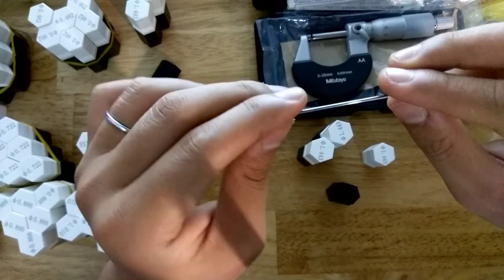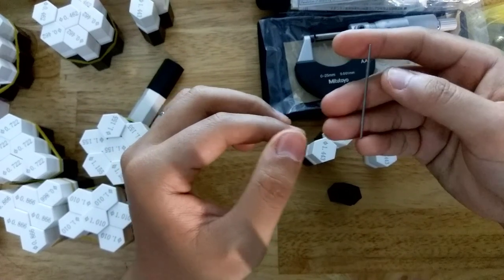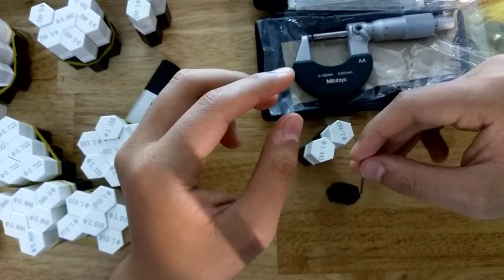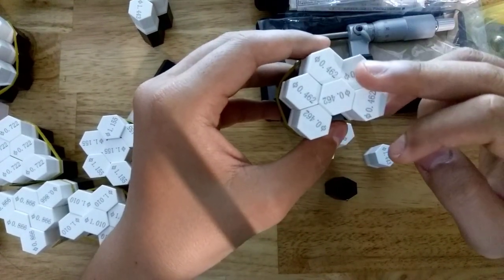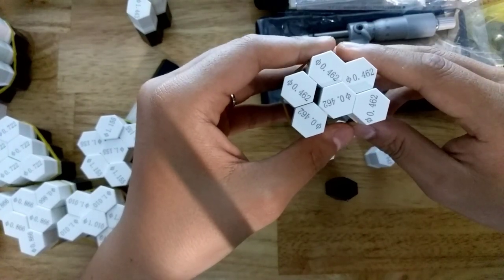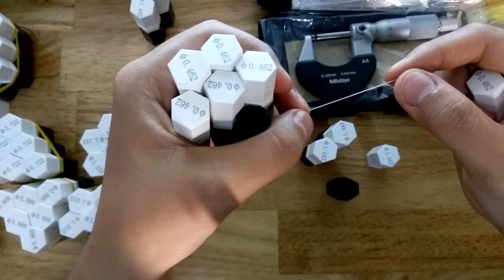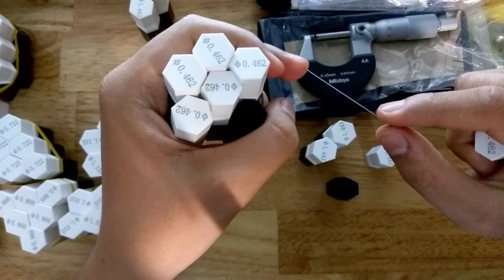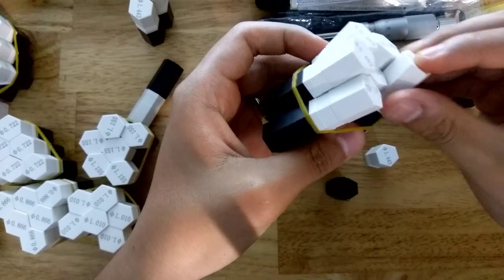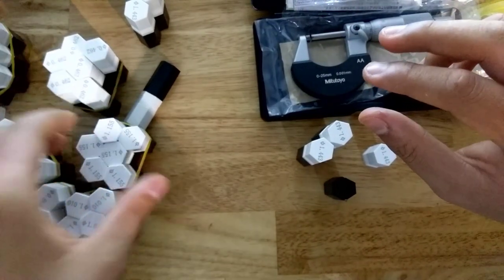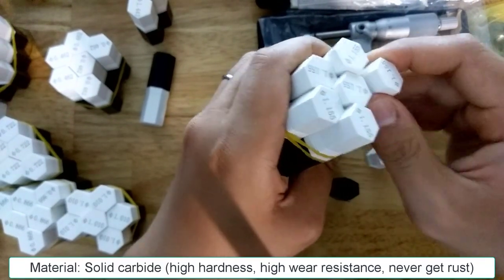As you can see on my hand, that's the wire I make. It's very hard, very high precision. The material is solid carbide, not hardened steel, so the hardness and the wear resistance is very good, much better than steel. You can see I have a very small side to check small pitch. This one on my hand is 0.462 millimeter, very small to check small pitch threads.